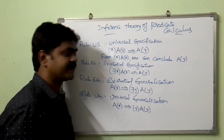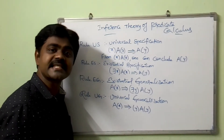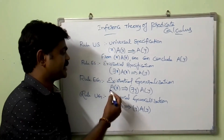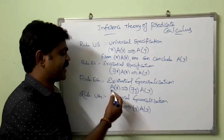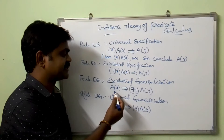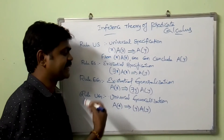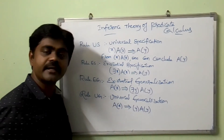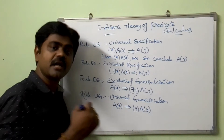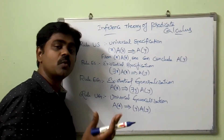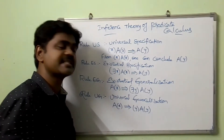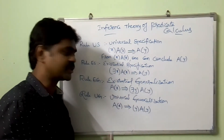And coming to Rule EG — that is existential generalization. If we have A(S), one can get there exists y, A(y). From A(S), we can conclude there exists y, A(y).